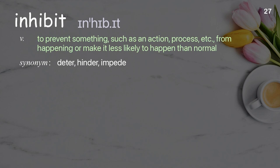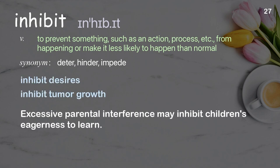Inhibit: to prevent something, such as an action or process, from happening, or make it less likely to happen than normal. Examples: inhibit desires; inhibit tumor growth. Excessive parental interference may inhibit children's eagerness to learn.